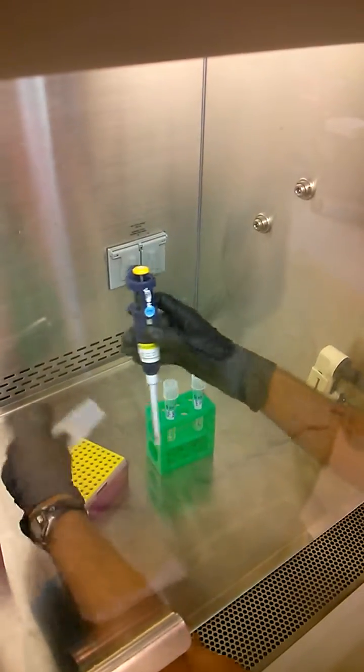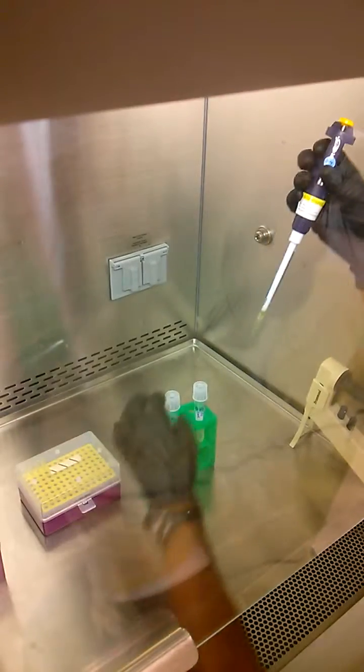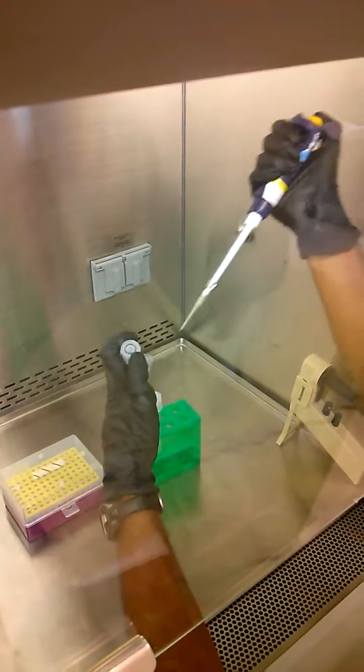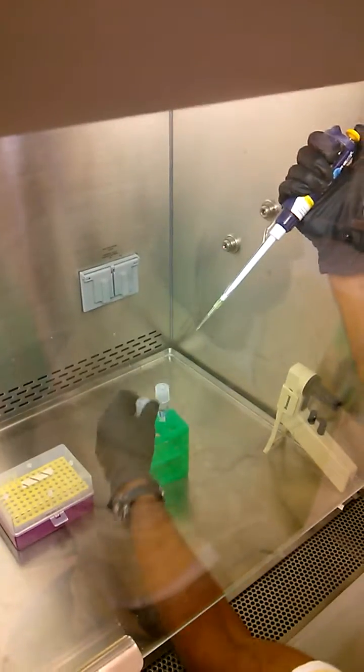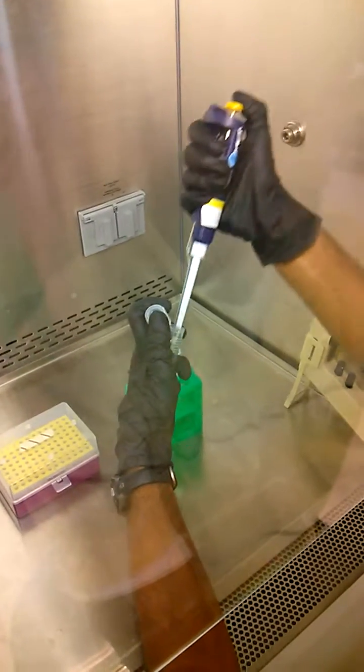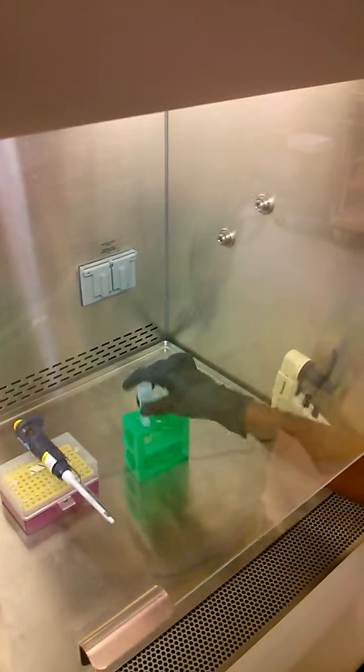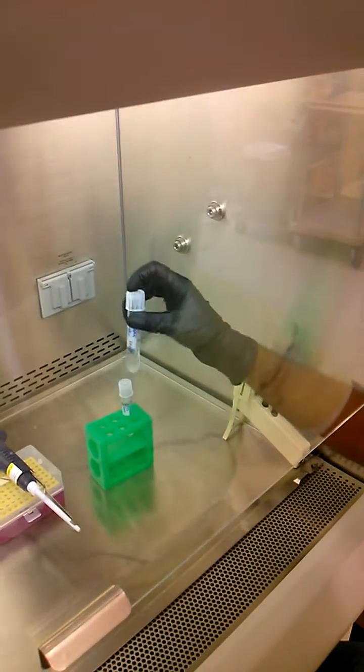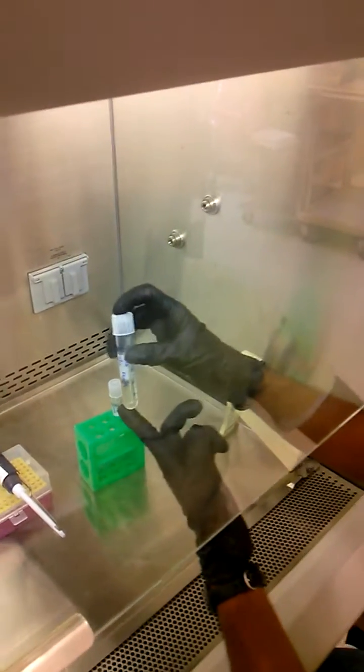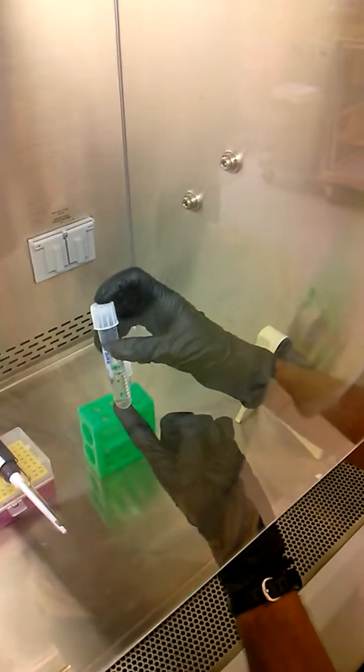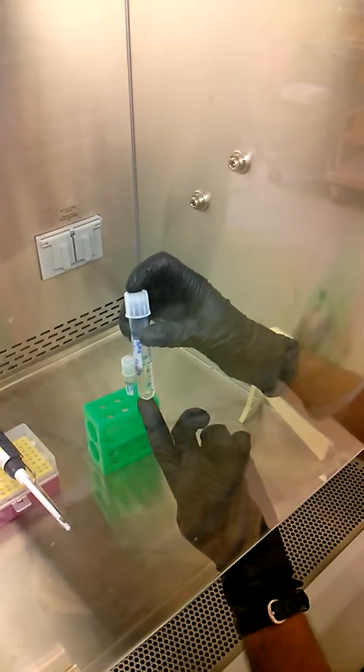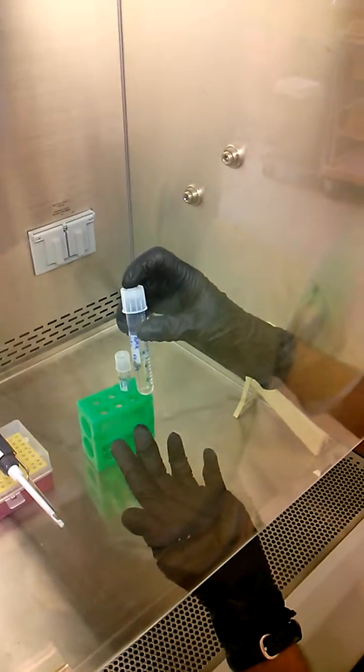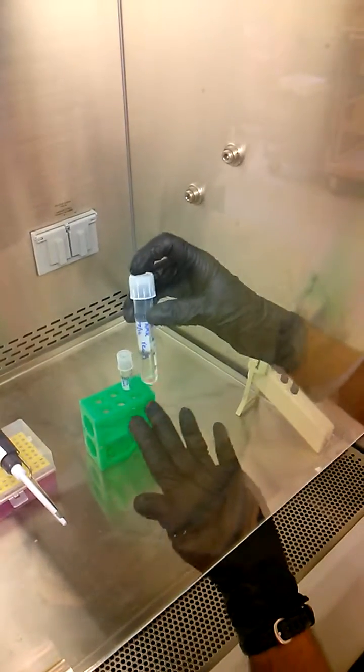So now I'm just going to simply do a 1% inoculation of the new culture. And it's very critical that the OD for this be watched closely and that P1 phage be added when the OD is around 0.15 or 0.25, basically between that range.